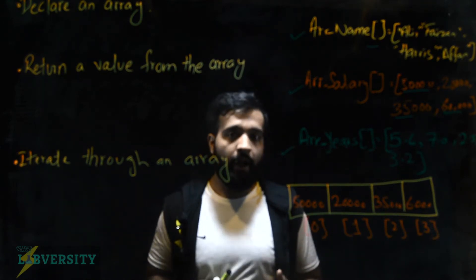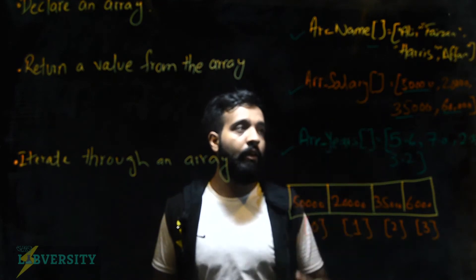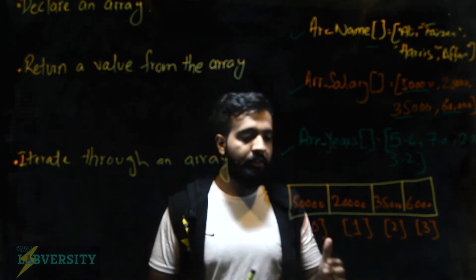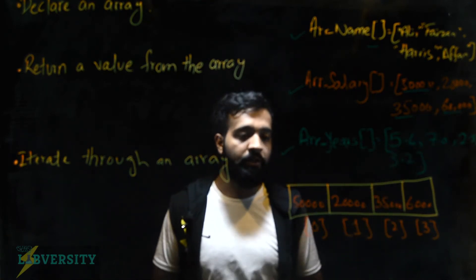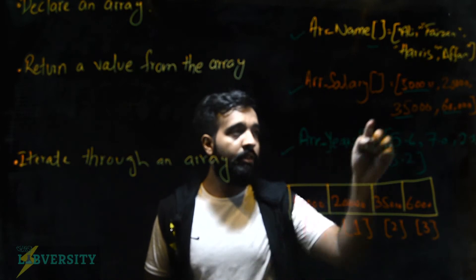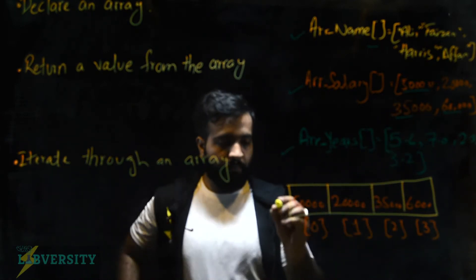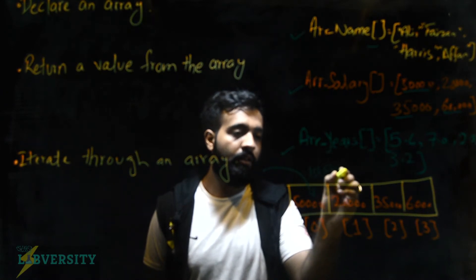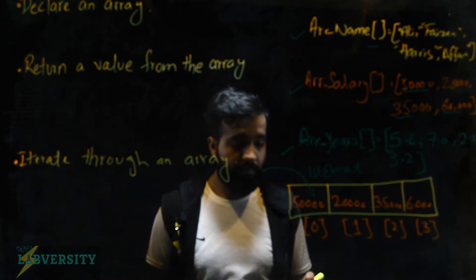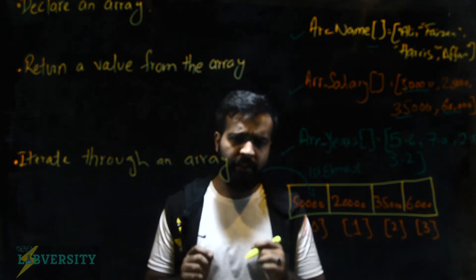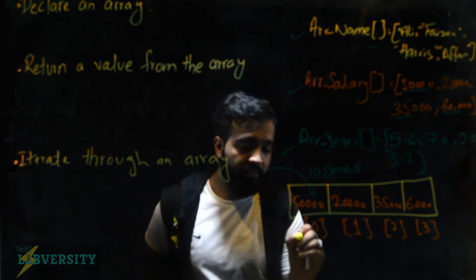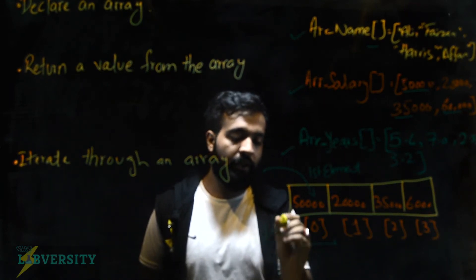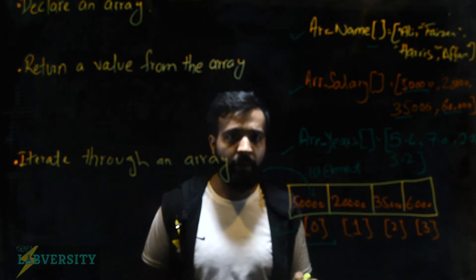An array is a collection, and in memory when we draw a rectangle while writing pseudo code, it makes empty spaces for a collection of data. As you try to populate the array — for example this array has four elements — there are two aspects to an array: the elements stored in it, and the index, which is the position in memory where each element is placed.